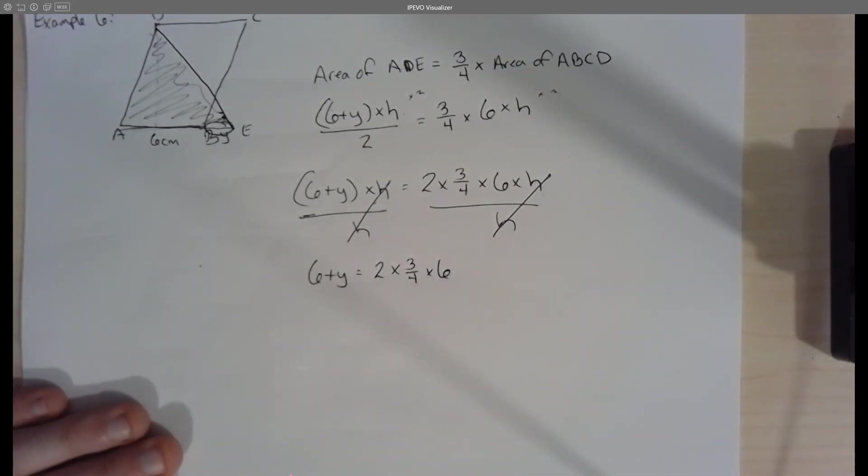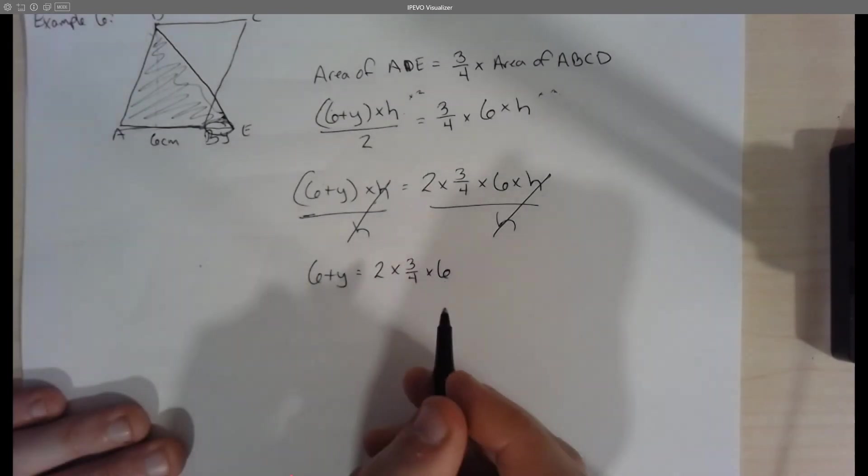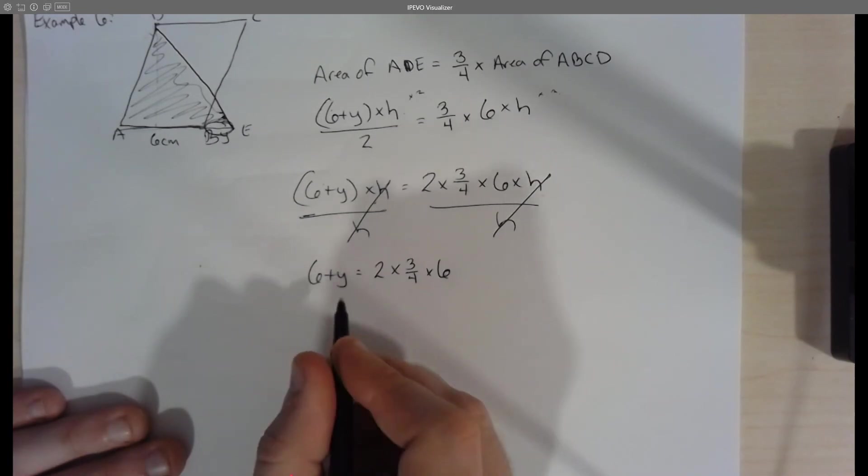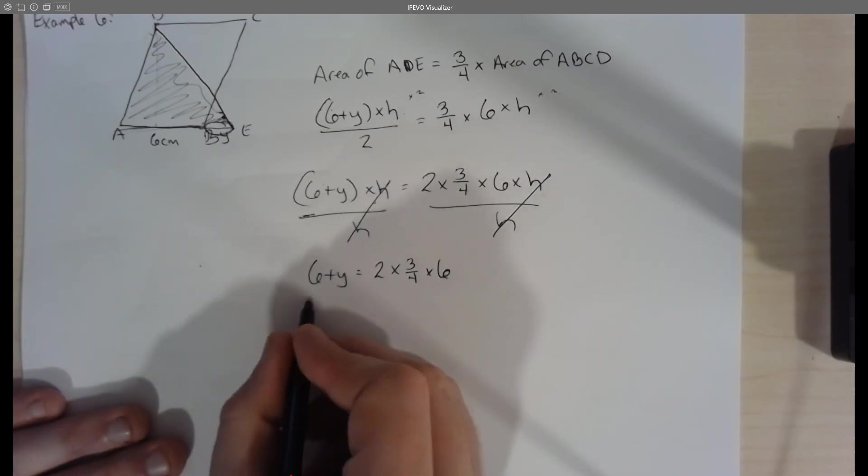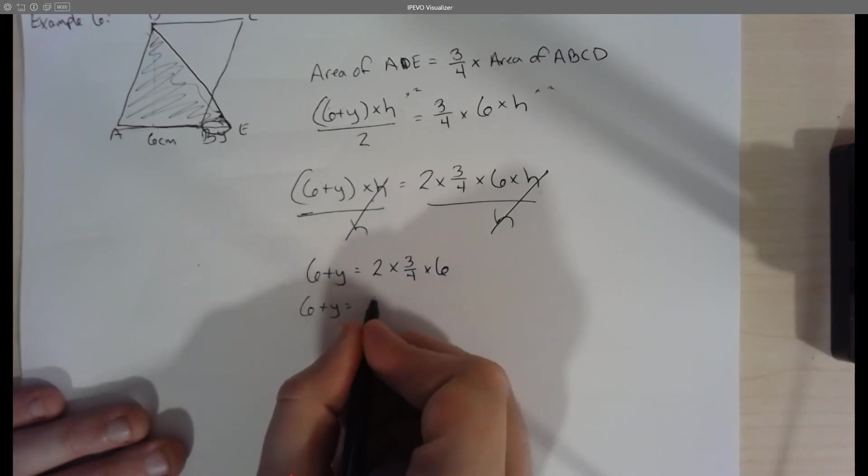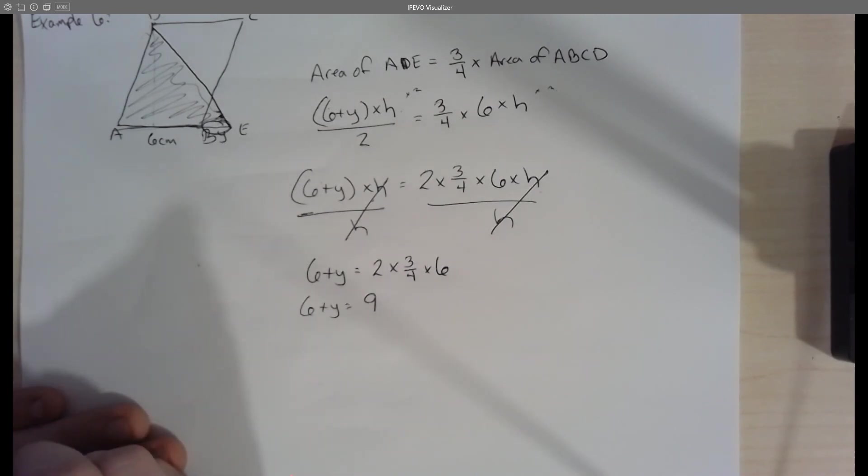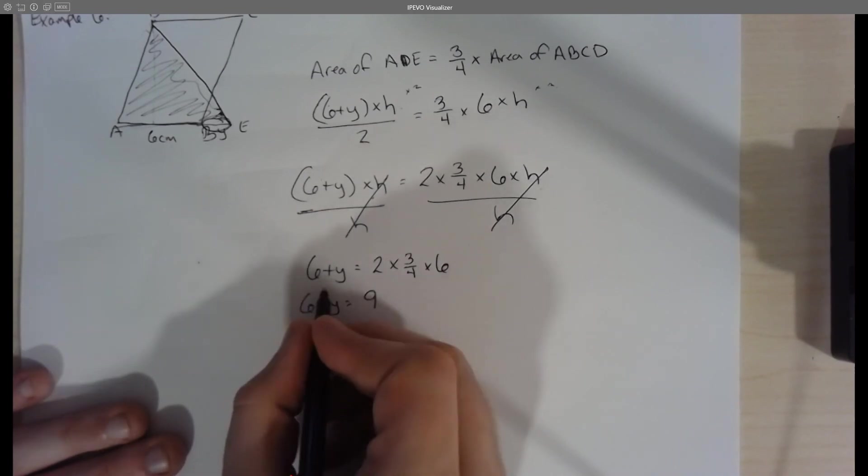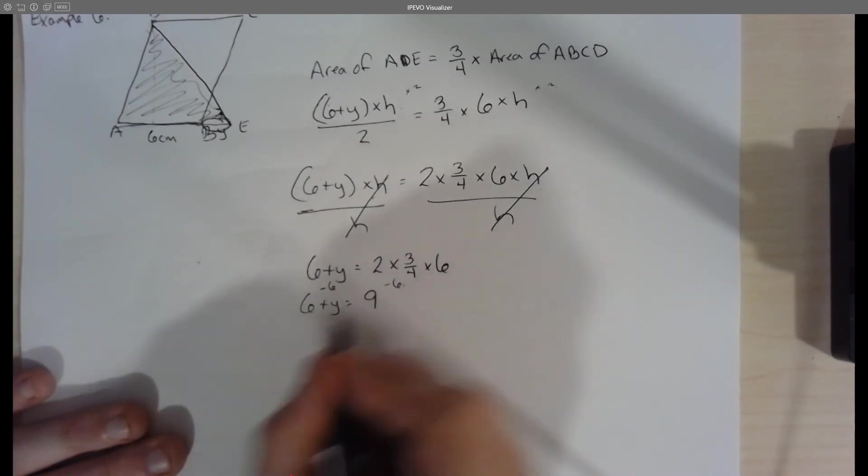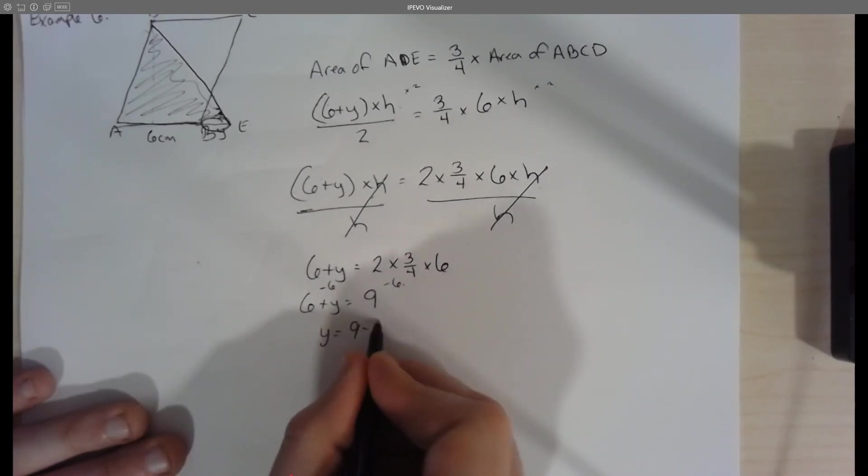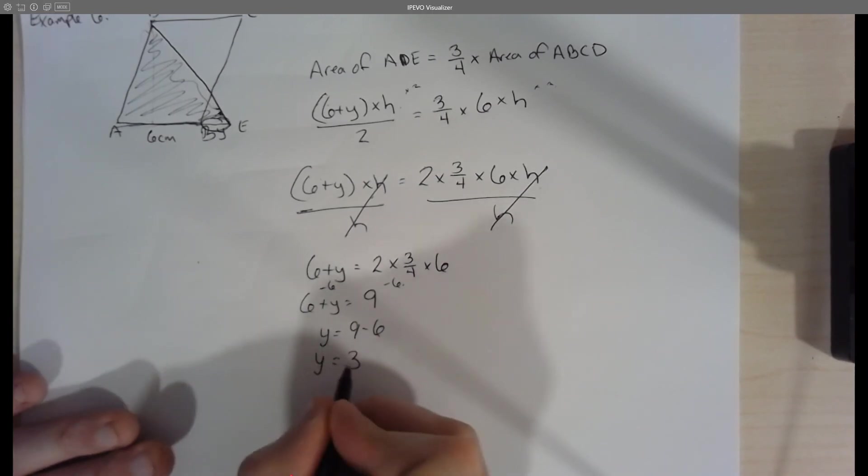So I have six plus Y equals two times three quarters times six. Okay. Well, this is getting a little bit more manageable. Two times three quarters times six, I can actually figure that out what that would be. And when I go through that, I would figure out that that equals nine. So I now have six plus Y equals nine. Let's get Y by itself. We have a plus six in the way. So minus six to get rid of that on both sides.